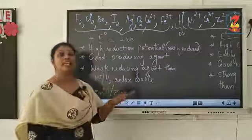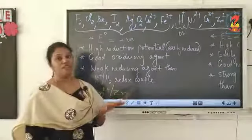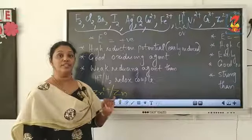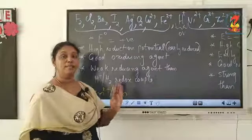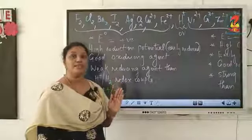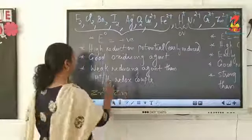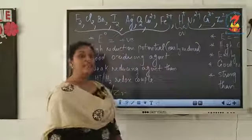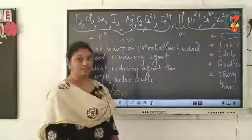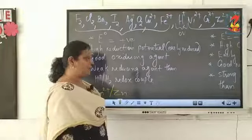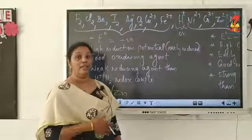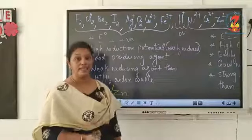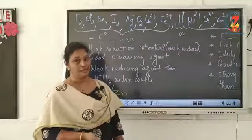So the first information from the electrochemical series: elements coming before hydrogen have positive E° values, meaning high reduction potential, meaning they are easily reduced, meaning they are good oxidizing agents or weak reducing agents — and they are weaker reducing agents than the hydrogen redox couple.